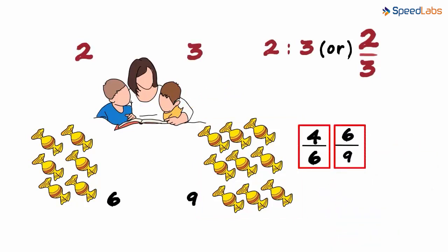Both these ratios when simplified will give us 2 by 3. In every case, the ratio has remained the same. What does this mean?